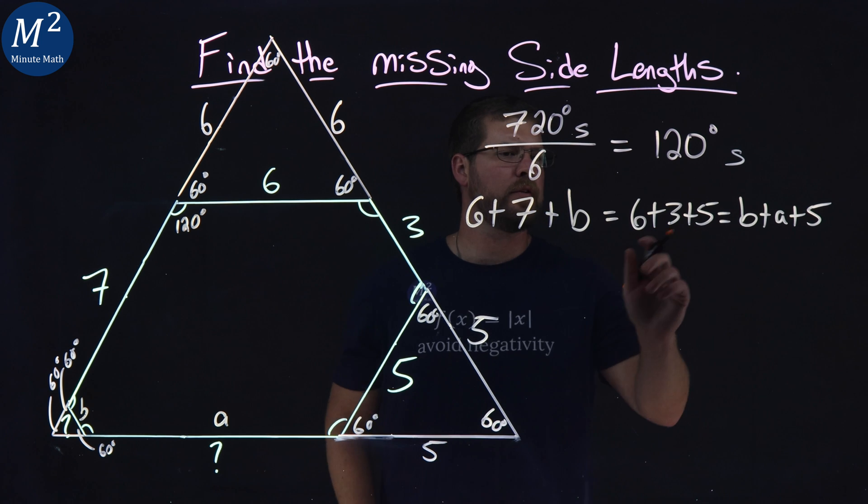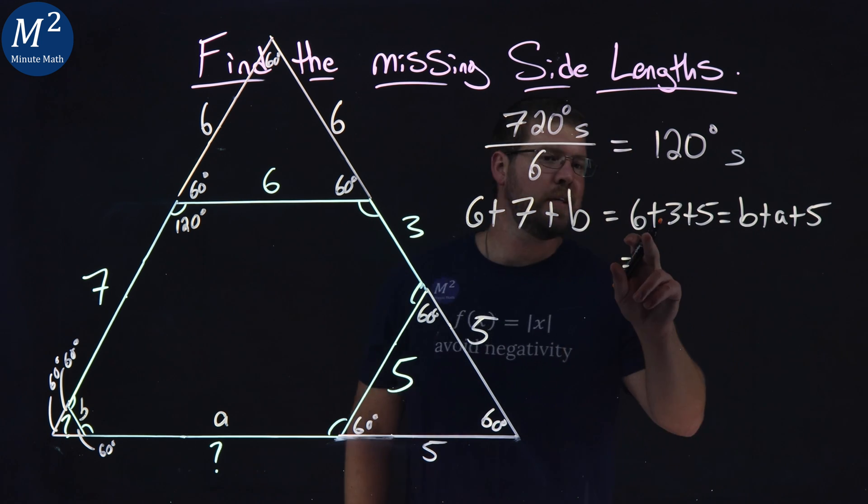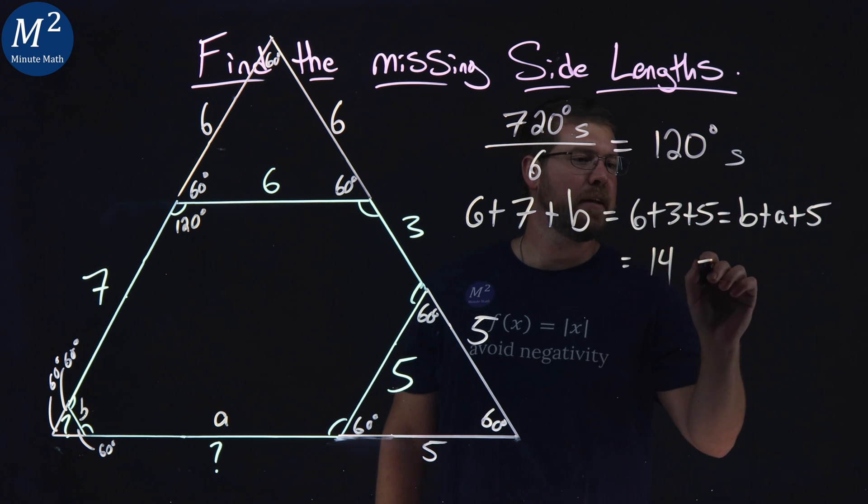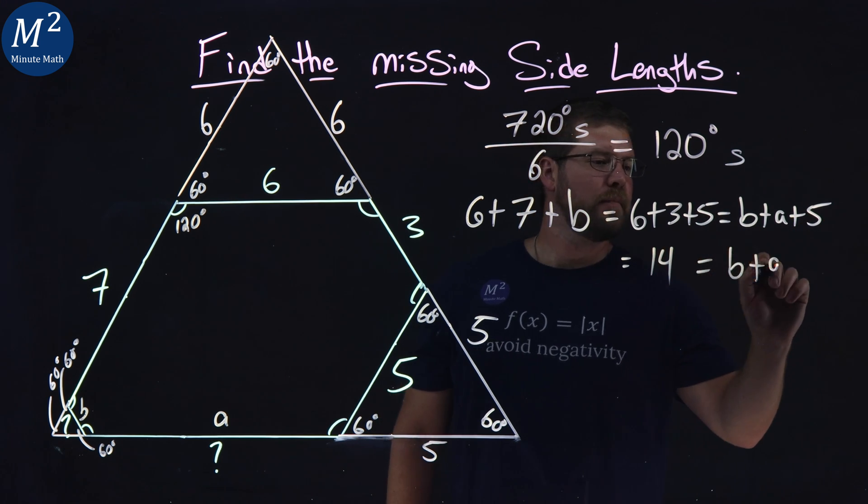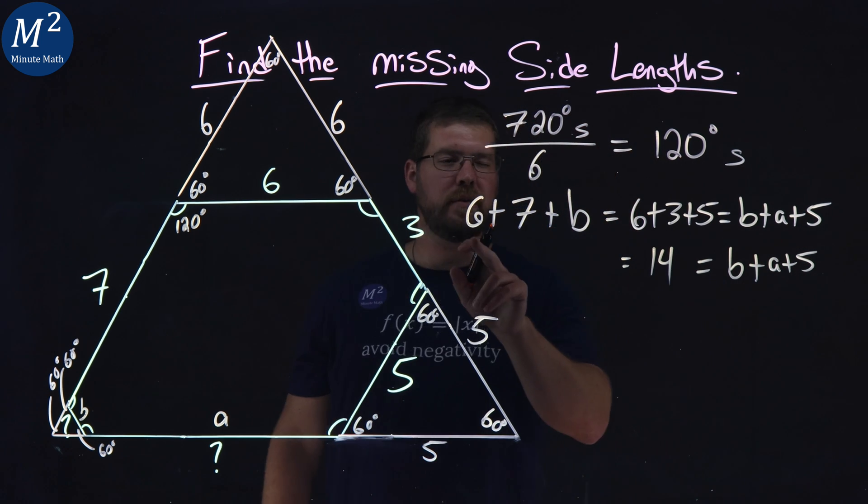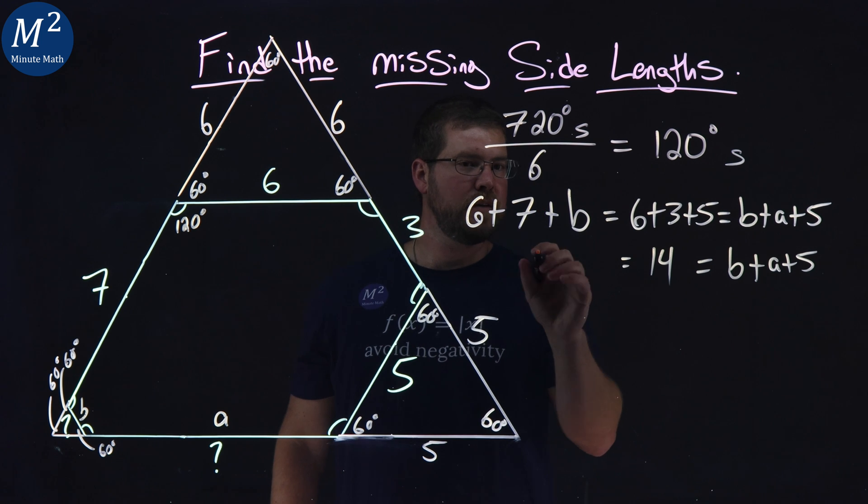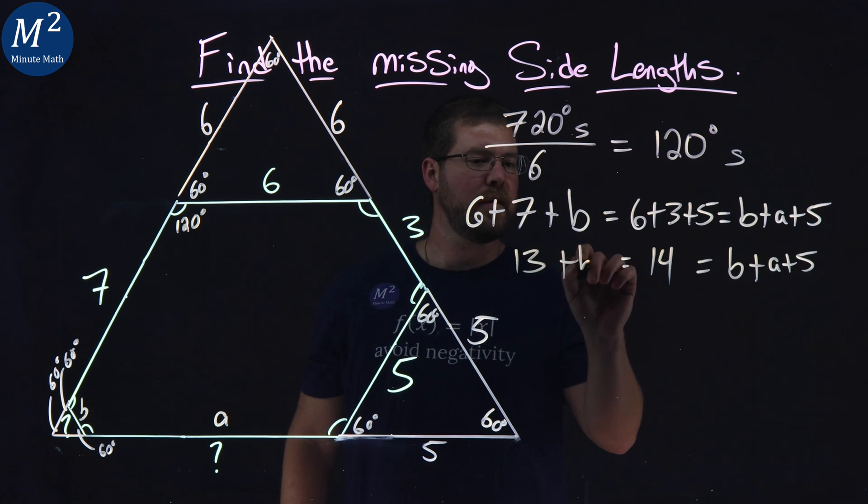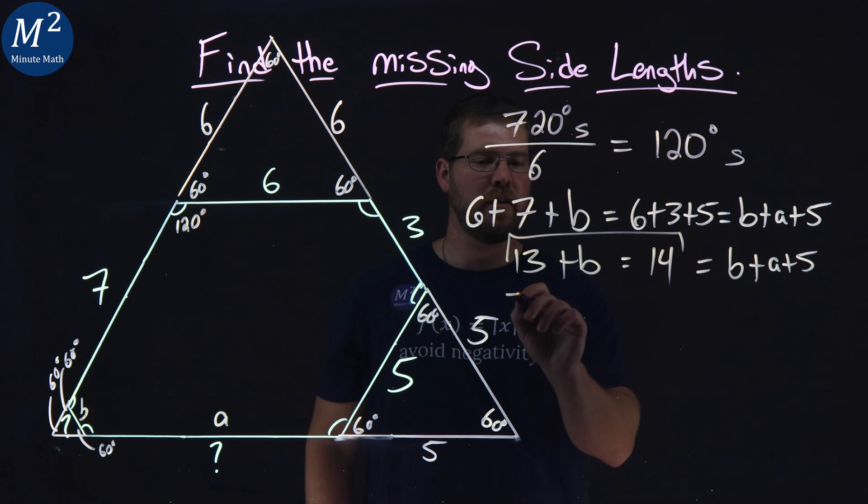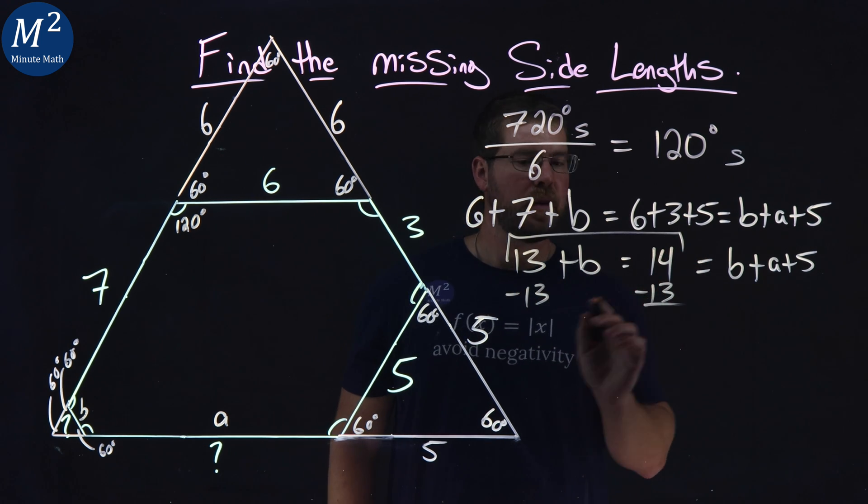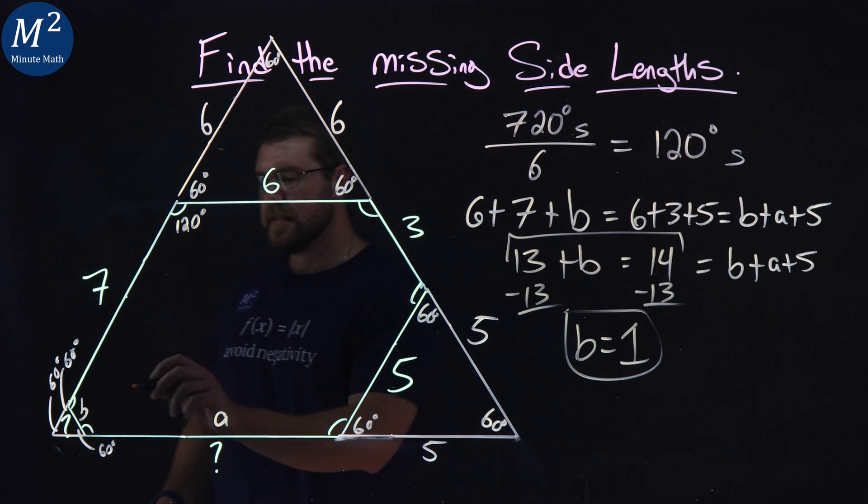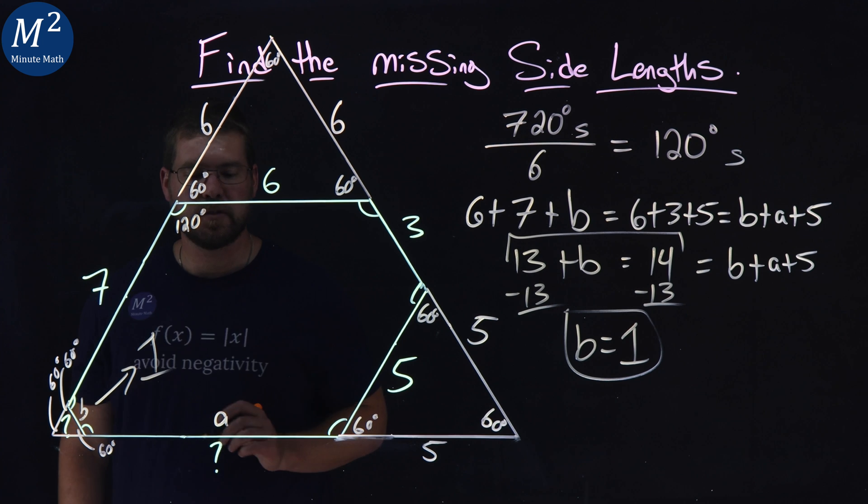All right. Well, 6 plus 3 plus 5, what does that come out to be? Well, 6 plus 3 is 9, plus 5 is 14. So we have 14 here. And B plus A plus 5, let's leave it as such. And 6 plus 7 plus B, 6 plus 7 is 13, plus B. All right. Let's focus on just this section here. Subtract the 13 to both sides. And we get B is equal to 1. So we got one of our missing side lengths right here is just a 1.